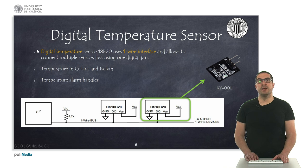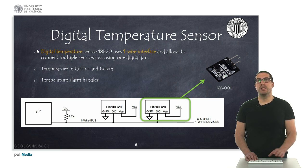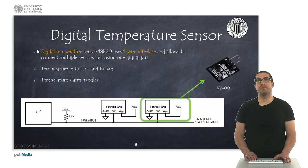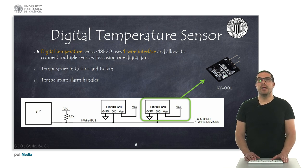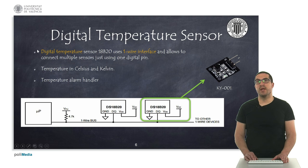We can also find the sensor from Dallas company, which is called the DS18B20. It uses a specific interface called the one-wire interface. This interface allows us to put several sensors using just one wire bus, and it measures in Celsius and Kelvin degrees, and also provides handlers for alarms. Here you can also find the KY-001 module.